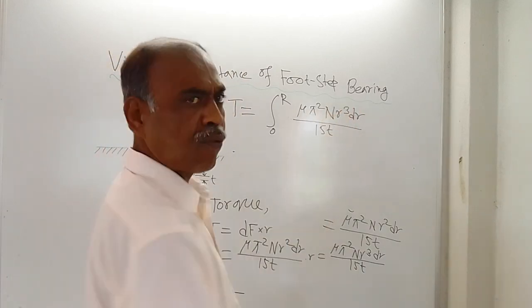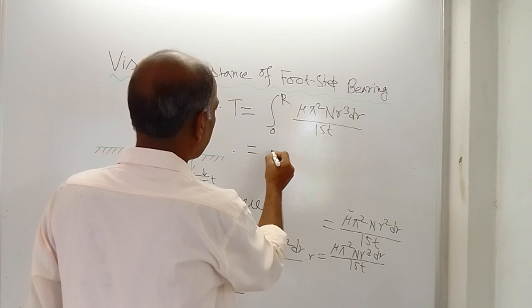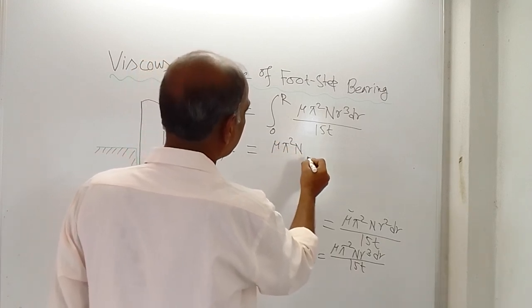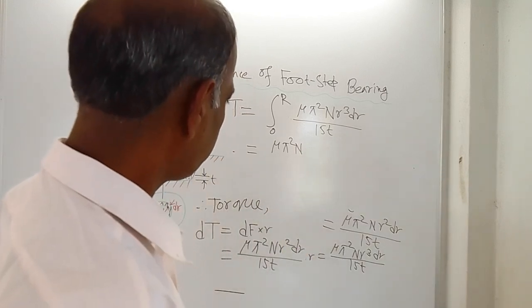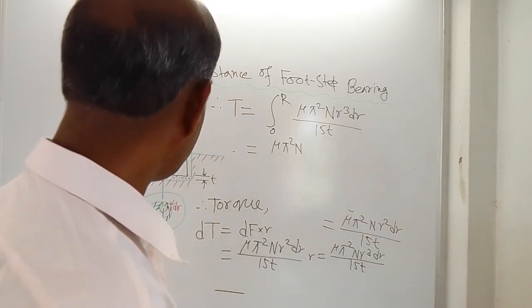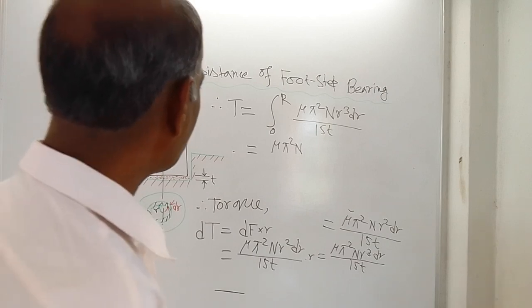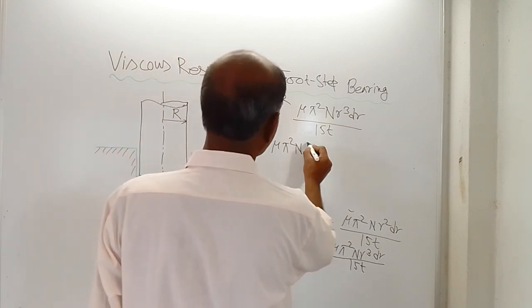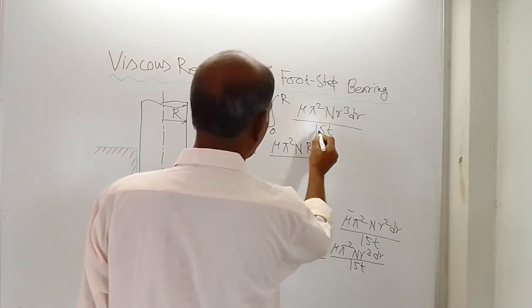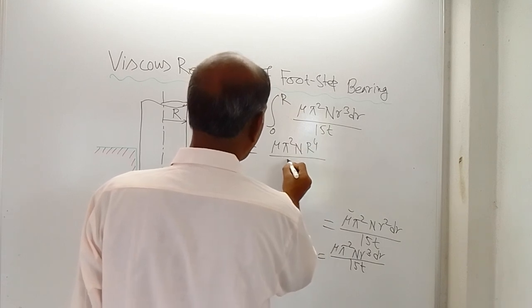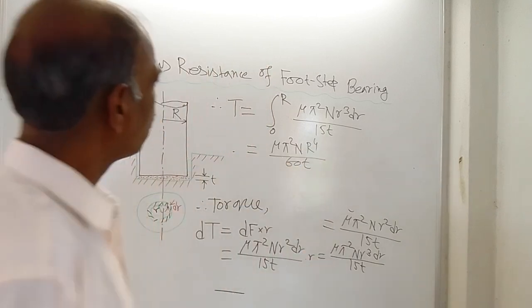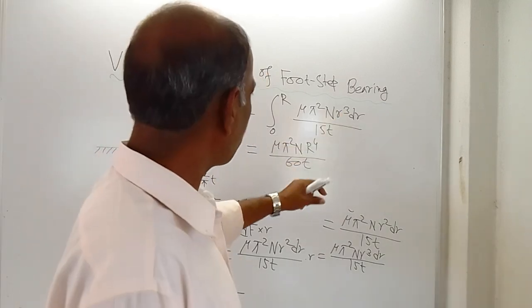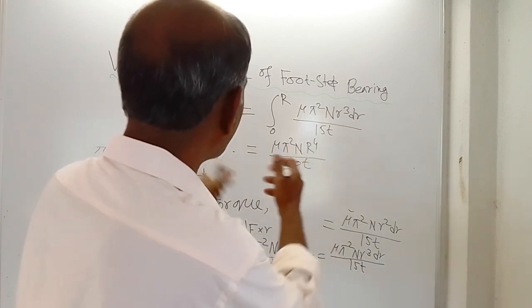And what is the result? You will get r⁴ / 4. So result is μ π² n r to the power 4 by 4, so 4 × 15, that is 60t. This is r⁴ / 4, so r⁴ by 4, 4 × 15 is 60t. So this is the total torque.